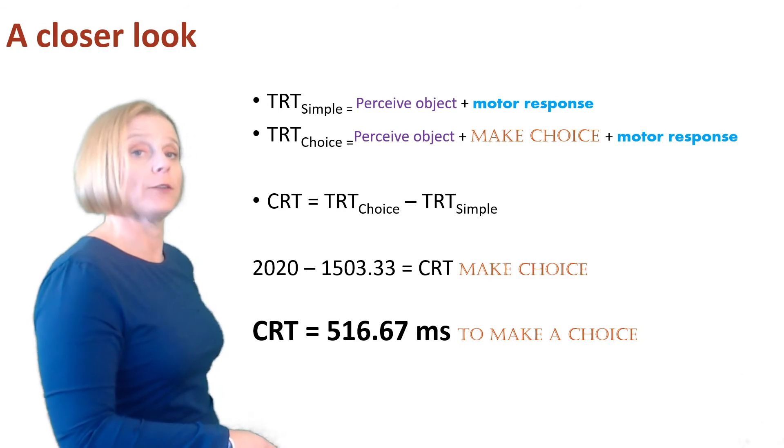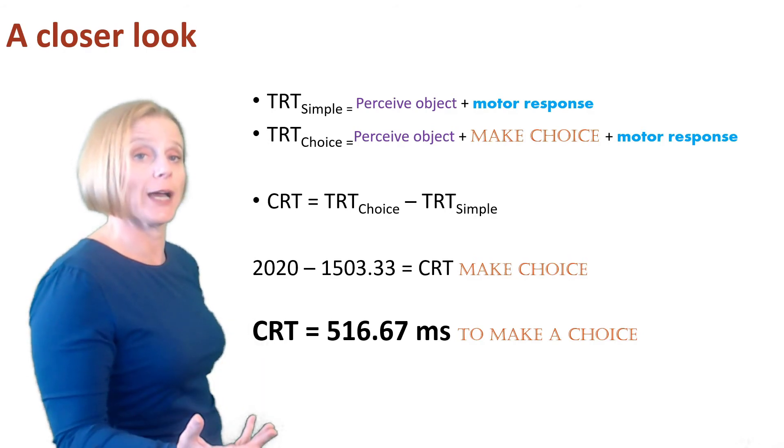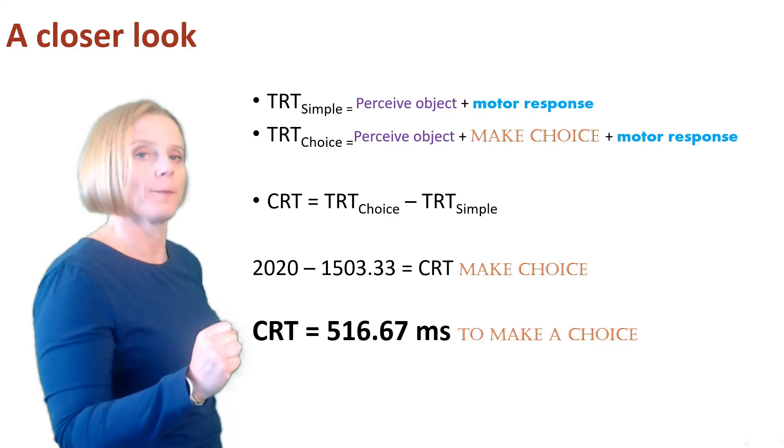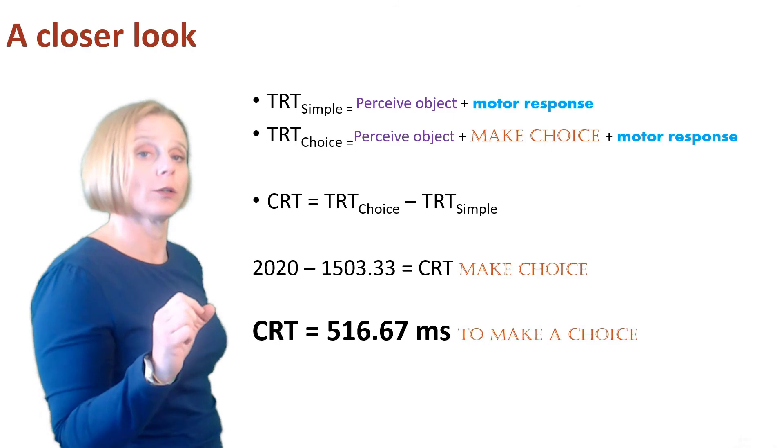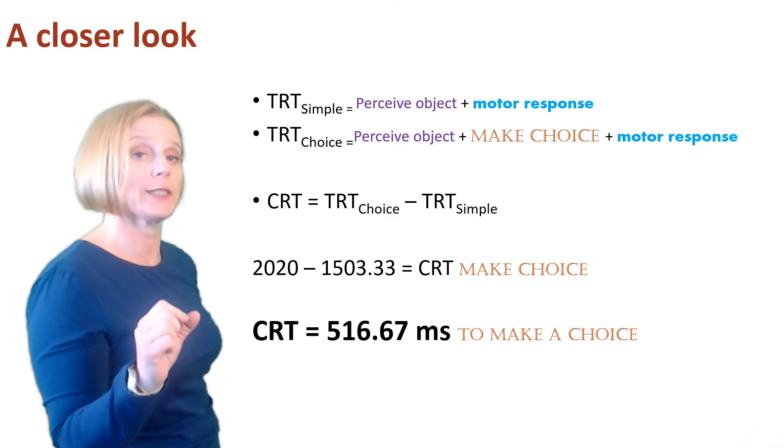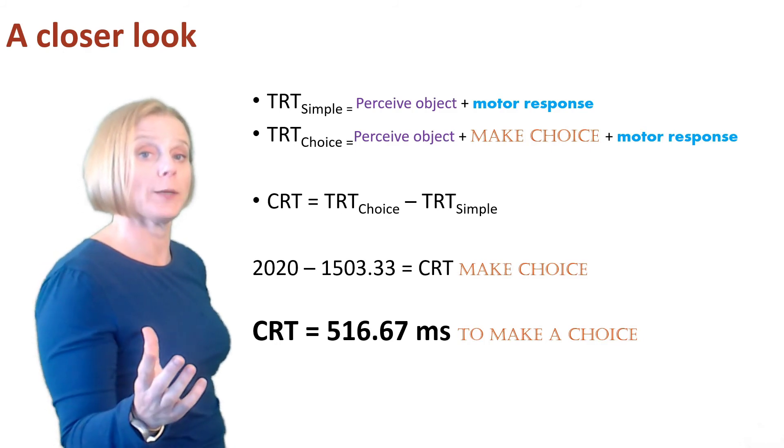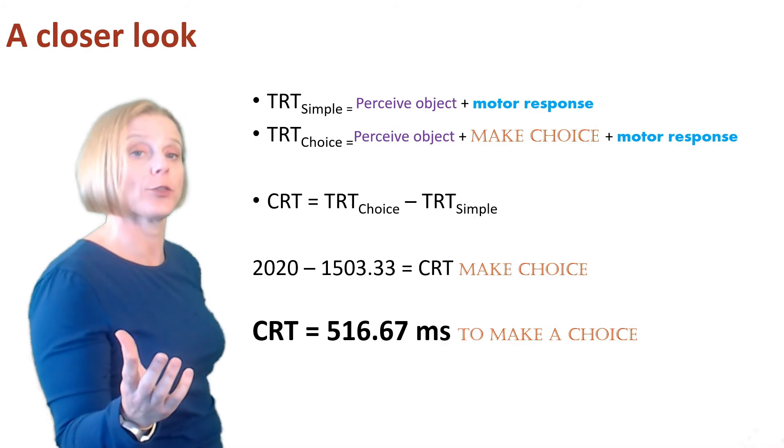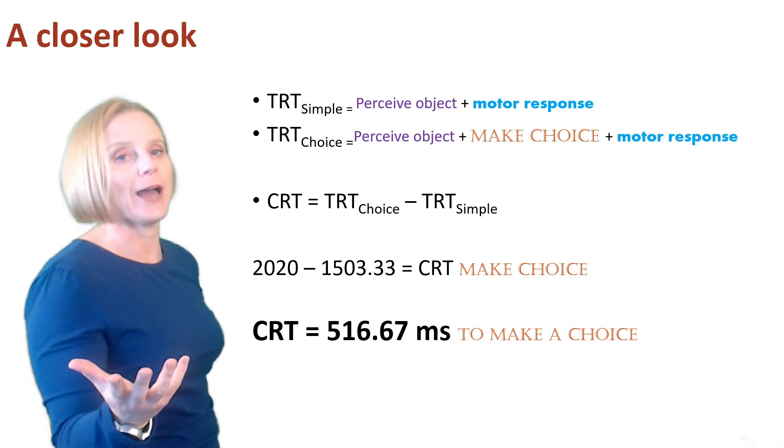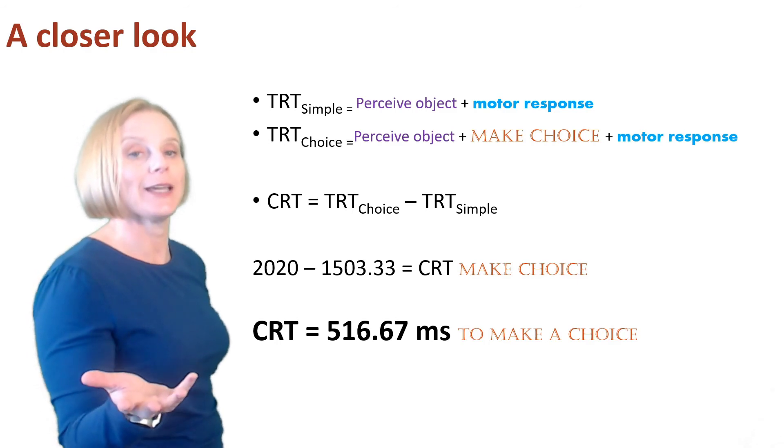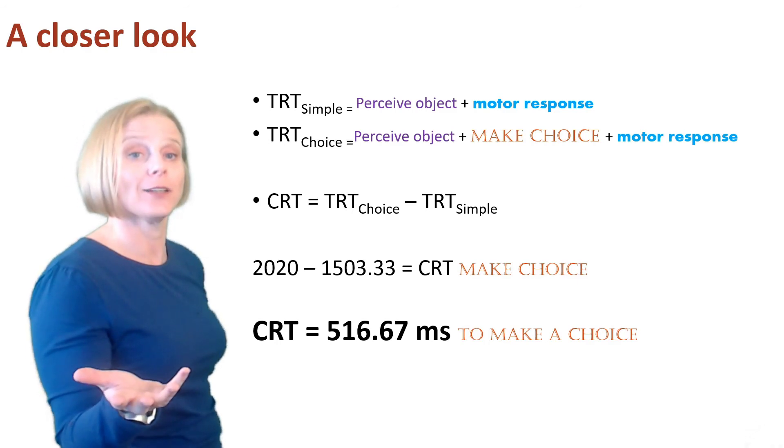So the TRT for the simple task is object perception plus motor response. The TRT for the choice task is object perception plus motor response plus making a choice. So our choice response time equals the total response time for the choice task minus the total reaction time for the simple task, or 2,020 milliseconds minus 1,503.33 milliseconds, and that equals 516.67 milliseconds. So it takes us about half a second to make a choice.